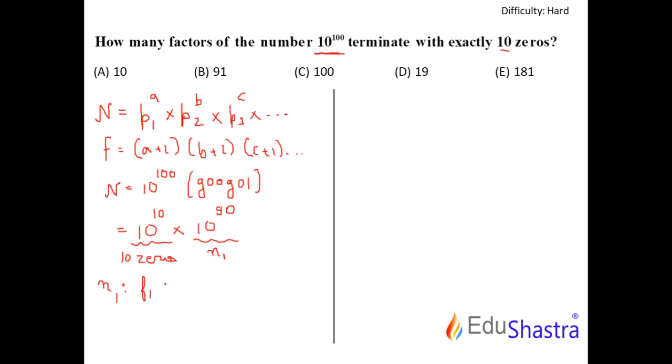However, if I just complete this thought, then I can say that for this number, the number of factors that end with 10 zeros is, well, first of all, prime factorize 10 raised to 90, that will be 2 raised to 90 times 5 raised to 90.